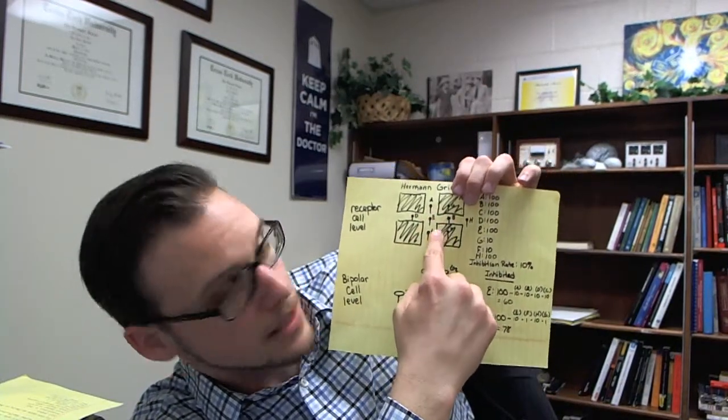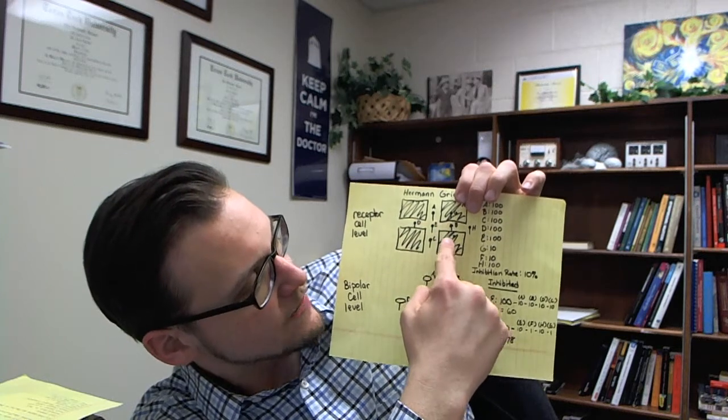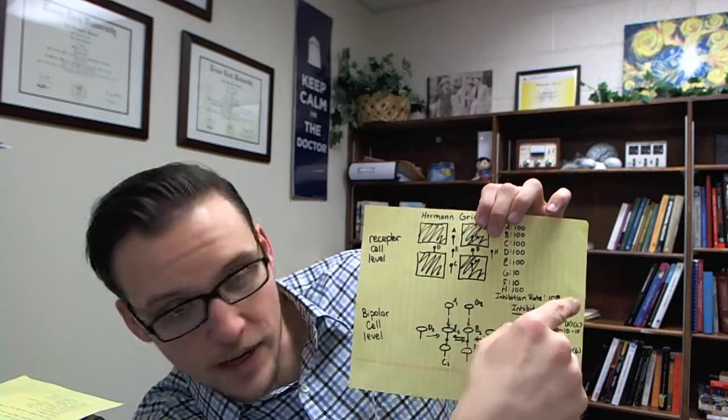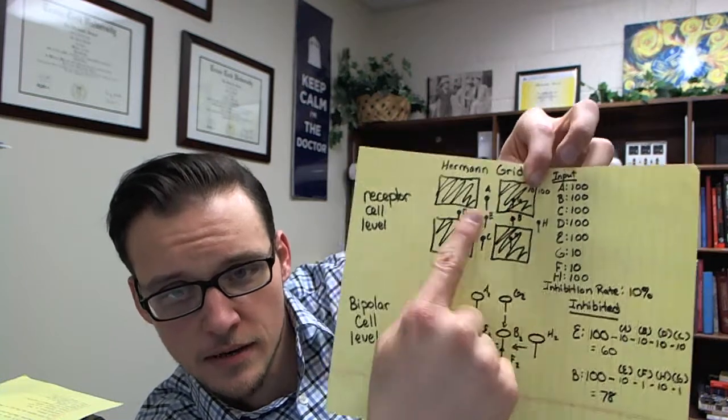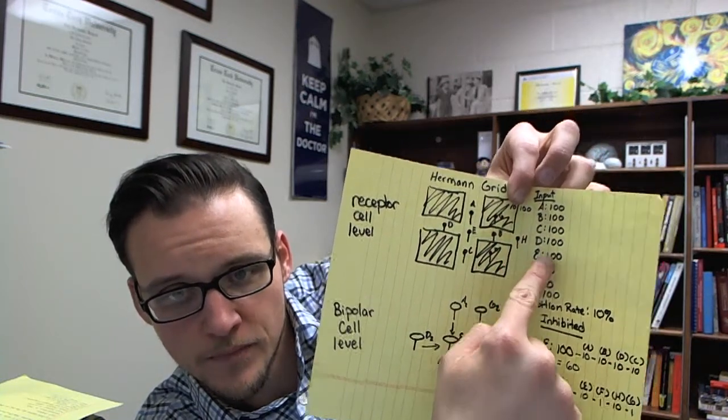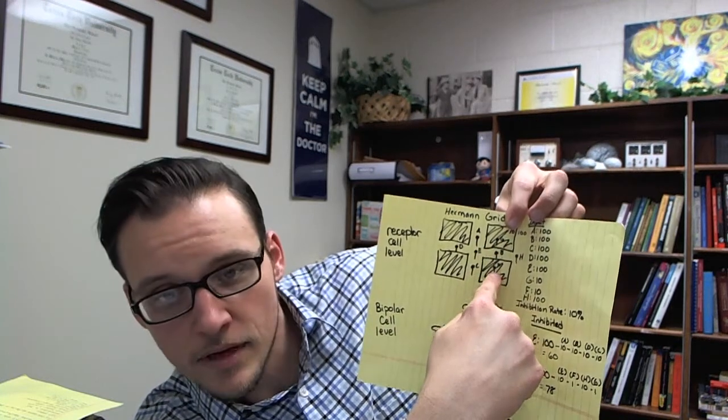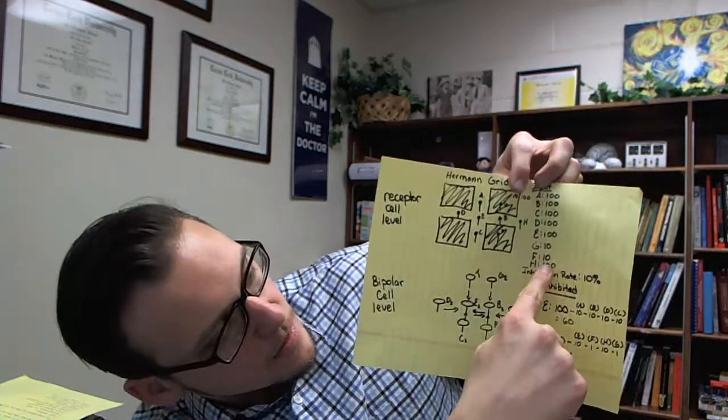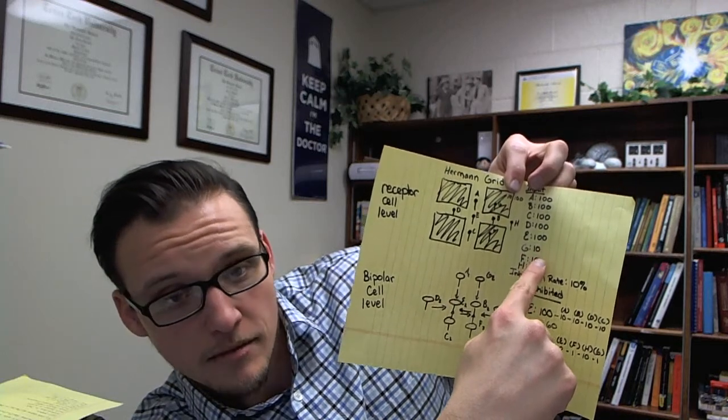So let's say for simplicity sake that, so you can see here we got receptor cells A, B, C, D, E, and I've got an F and a G over here, but you can't see those very well. So you can see that A through E are all in the white troughs, okay? So let's say that they are getting the maximum illumination. So they're getting values of 100. So you can see right there, A through E, 100. Well, G and F, F and G, are in the dark. So they're getting less illumination, 10.